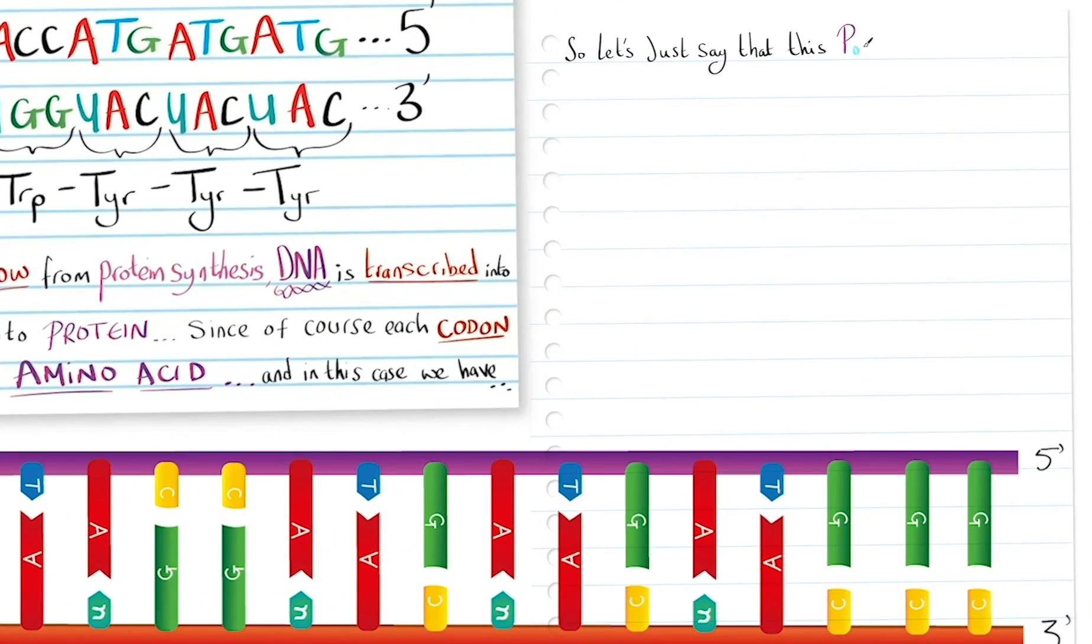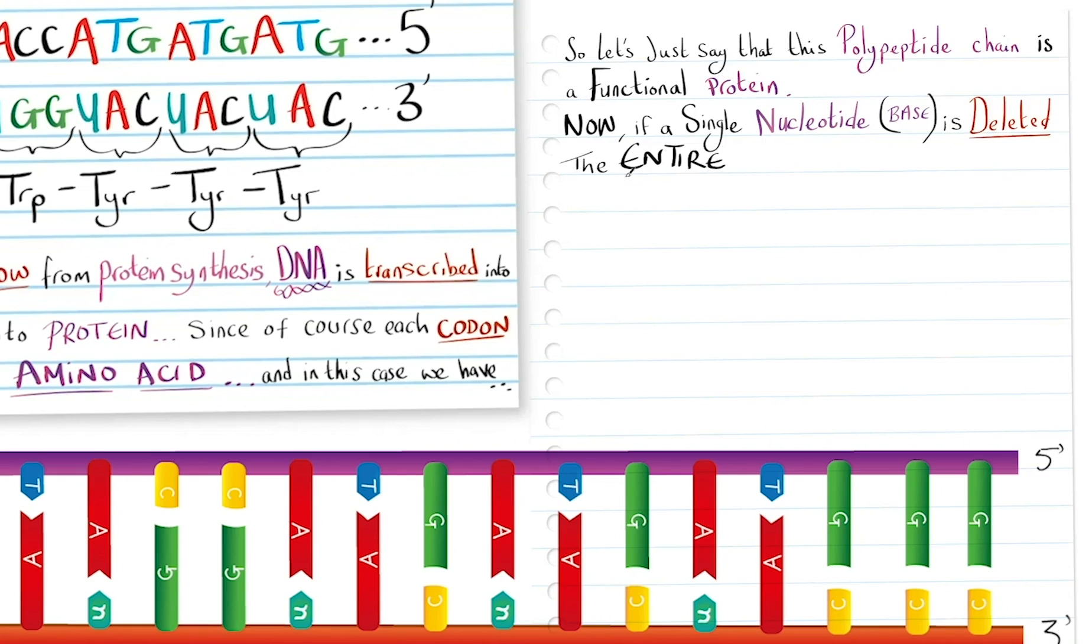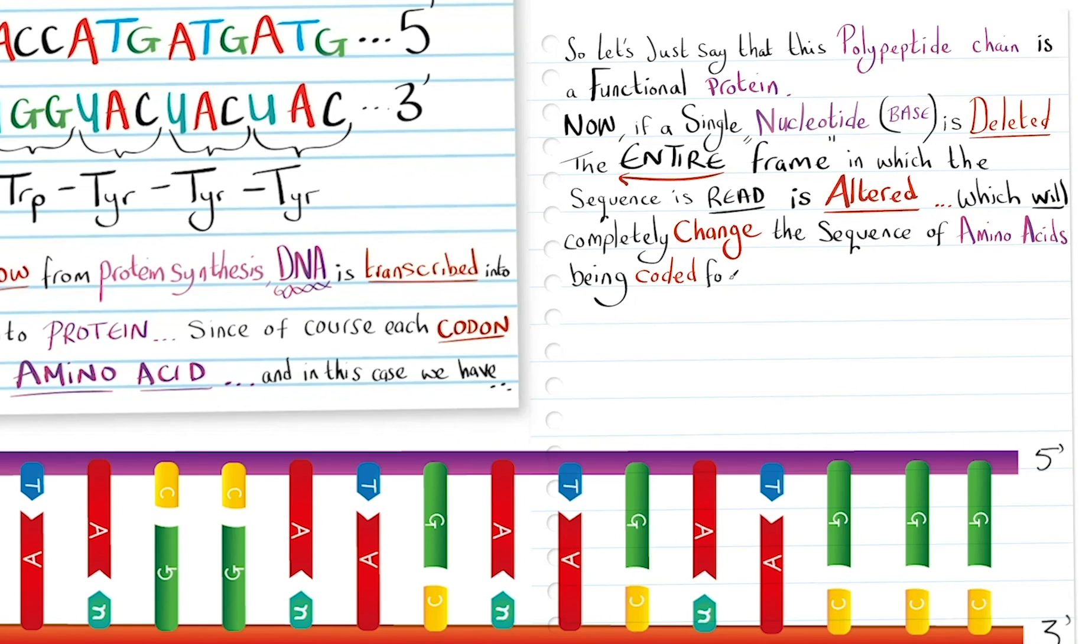So let's just say that this polypeptide chain is a functional protein. Now if a single nucleotide base is deleted, the entire frame in which the sequence is read is altered, which will completely change the sequence of amino acids being coded for from that point of the mutation, the deletion. Let's take a look at how.